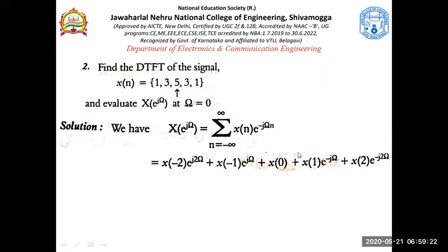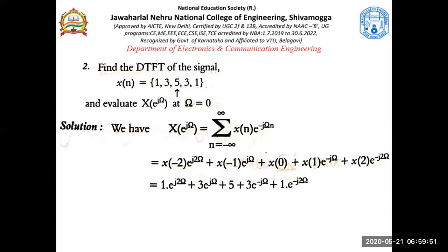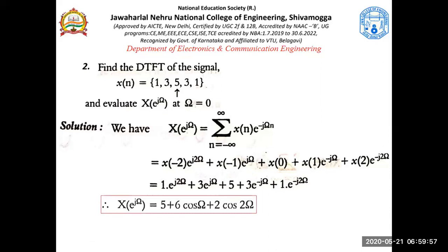For all positive values of n you get negative exponentials, and for all negative values of n you get positive exponentials. Substituting: X(−2)=1, X(−1)=3, X(0)=5. Now we can pair up exponentials. E^(jω) + e^(−jω) = 2cos(ω), so 3·2cos(ω) = 6cos(ω). Similarly, e^(j2ω) + e^(−j2ω) = 2cos(2ω).